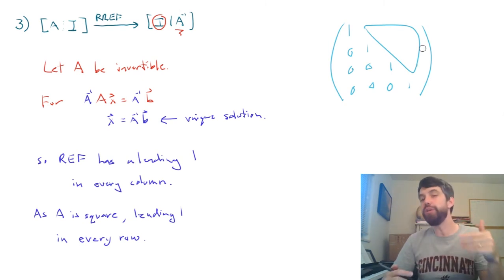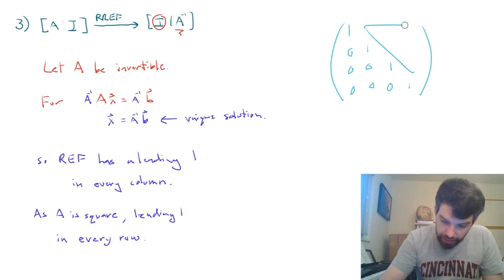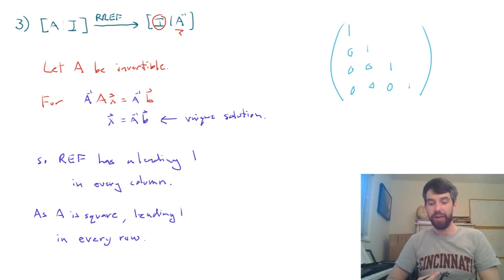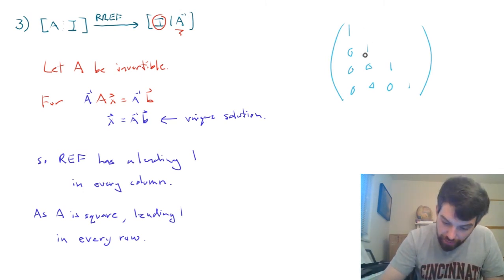Now, that was just for REF. What about reduced row echelon form? And the way that worked is that, let's take away all of this stuff up here, because that's what the reduced part does. It says, how do we fill in the upper right part of my matrix?